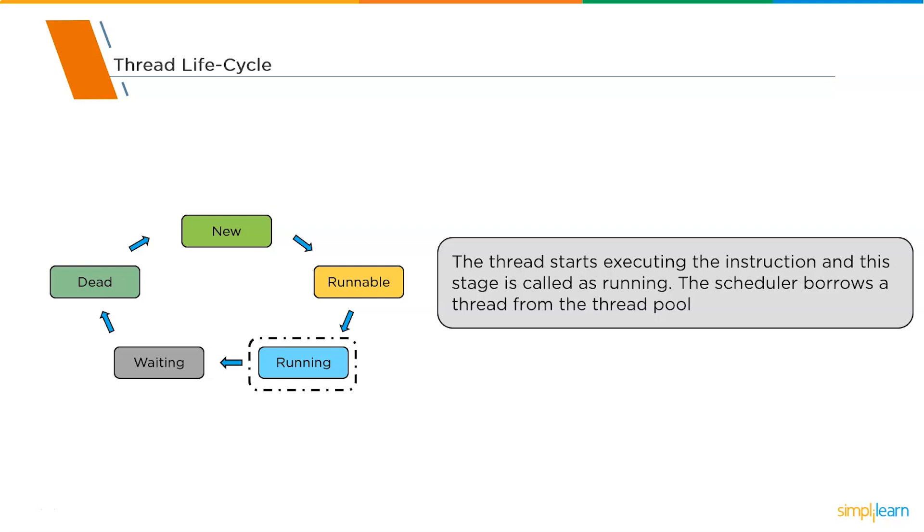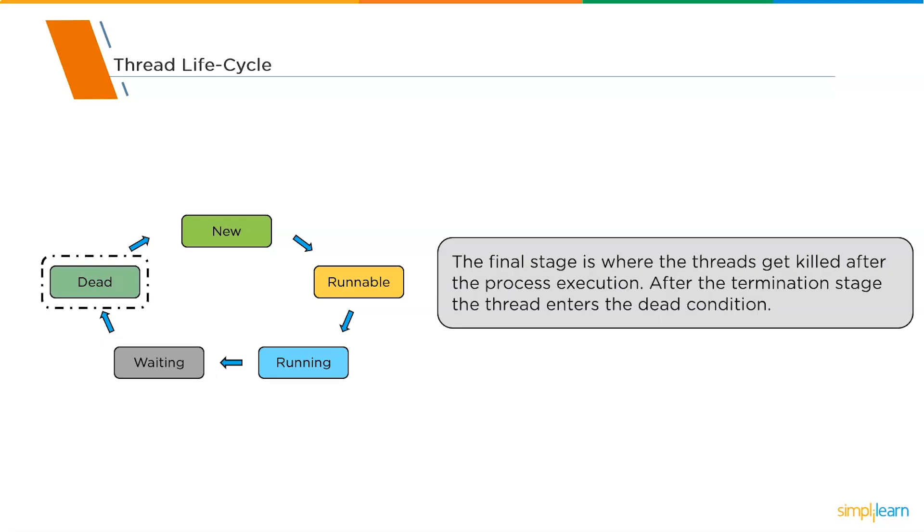Once the process is running, it can continue in that stage until the process gets finished or sometimes it has to wait because of the response that it needs from another process. That stage is called waiting. In case the thread has finished executing the process, it can directly enter into the dead state. The waiting stage is where the current thread is in the wait situation as it needs a response from another thread. There are two ways: it might have to wait for the response from the other thread, or it might finish the execution stage and directly enter into the dead state. The dead state is the last stage where the thread gets killed after the process execution. After the termination stage, the thread enters into the dead condition.